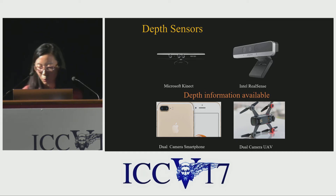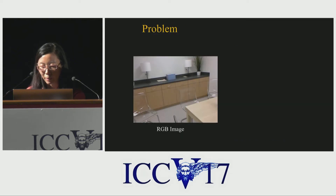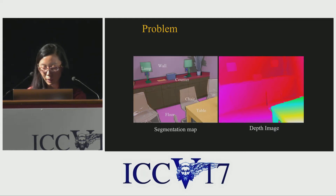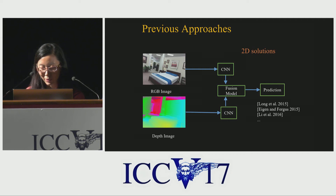In this work, we propose a general method to incorporate depth information. We take RGB-D semantic segmentation as an illustrative example to showcase our method. Given the RGB image and its corresponding depth map, the problem is to predict the semantic labels. In previous works, 2D convolutions are applied on RGB and depth images, and a late fusion model is used to predict the final segmentation.